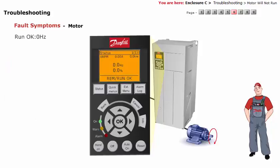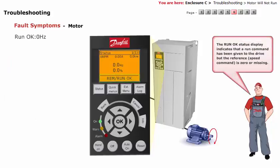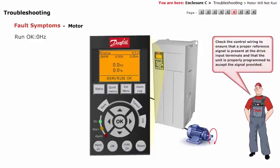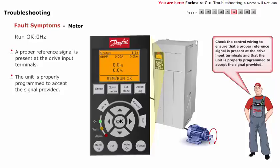Run OK Zero Hertz: The Run OK status display indicates that a run command has been given to the drive, but the reference speed command is 0 or missing. Check the control wiring to ensure that a proper reference signal is present at the drive input terminals and that the unit is properly programmed to accept the signal provided.